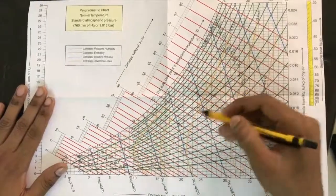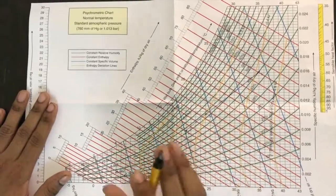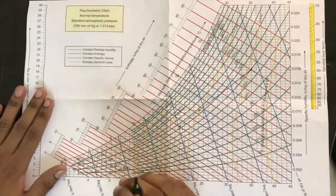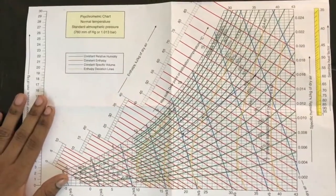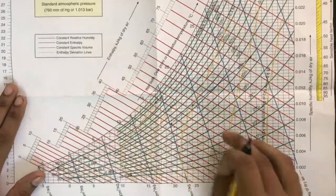Relative humidity lines are available. Relative humidity means it is the amount of humidity per kilogram of air to the amount of humidity per kilogram of air in saturated condition. That is the relative humidity. Now these are the enthalpy lines.